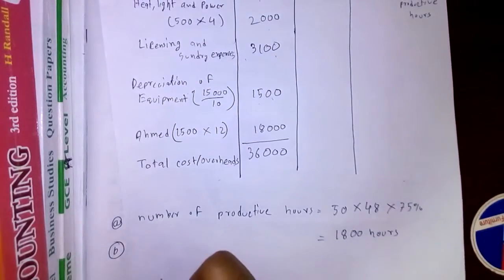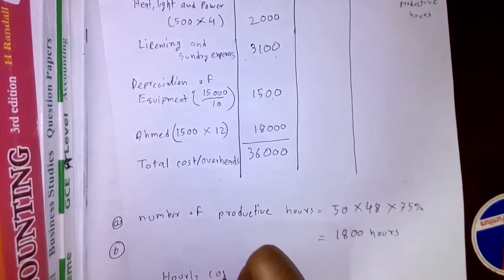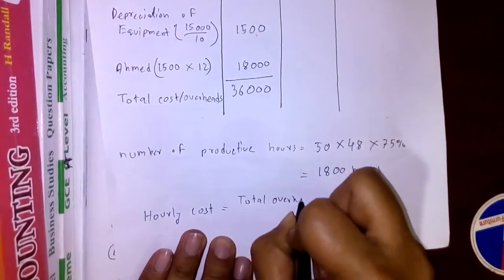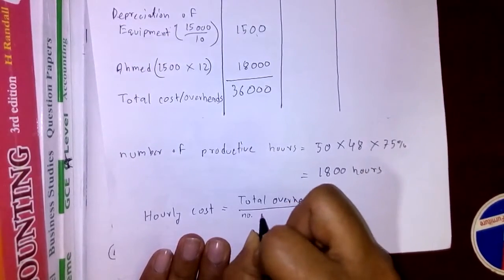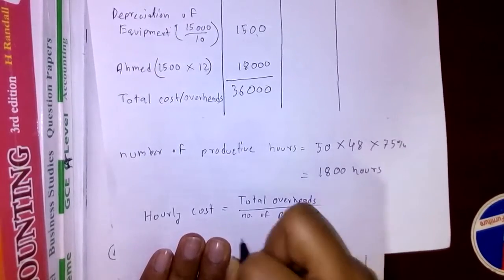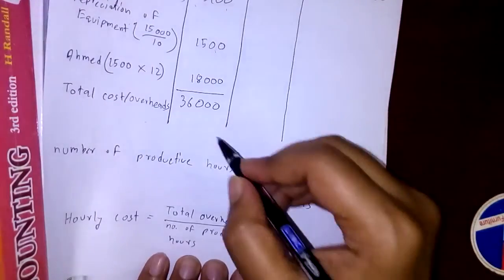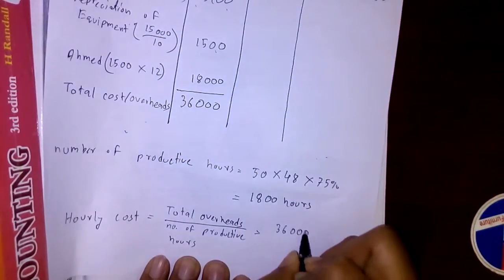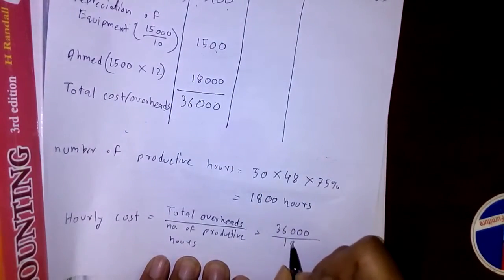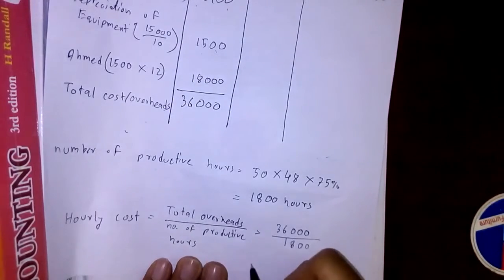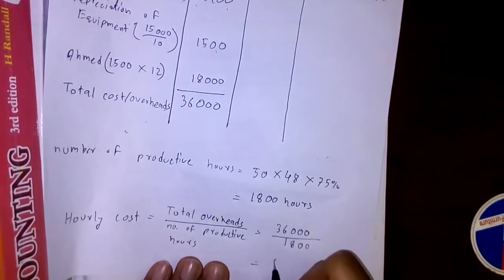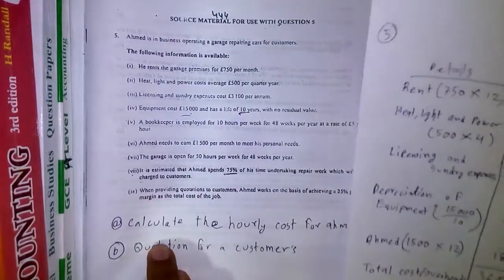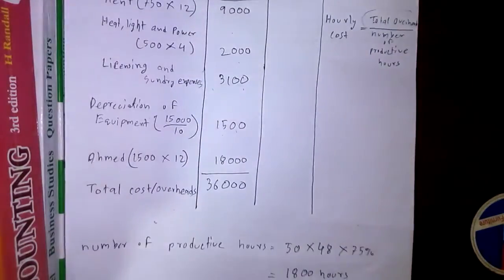Now we can find the hourly cost. Hourly cost = total overhead ÷ number of productive hours = £36,000 ÷ 1,800 hours = £20 per hour. So the hourly cost for Ahamed is £20.